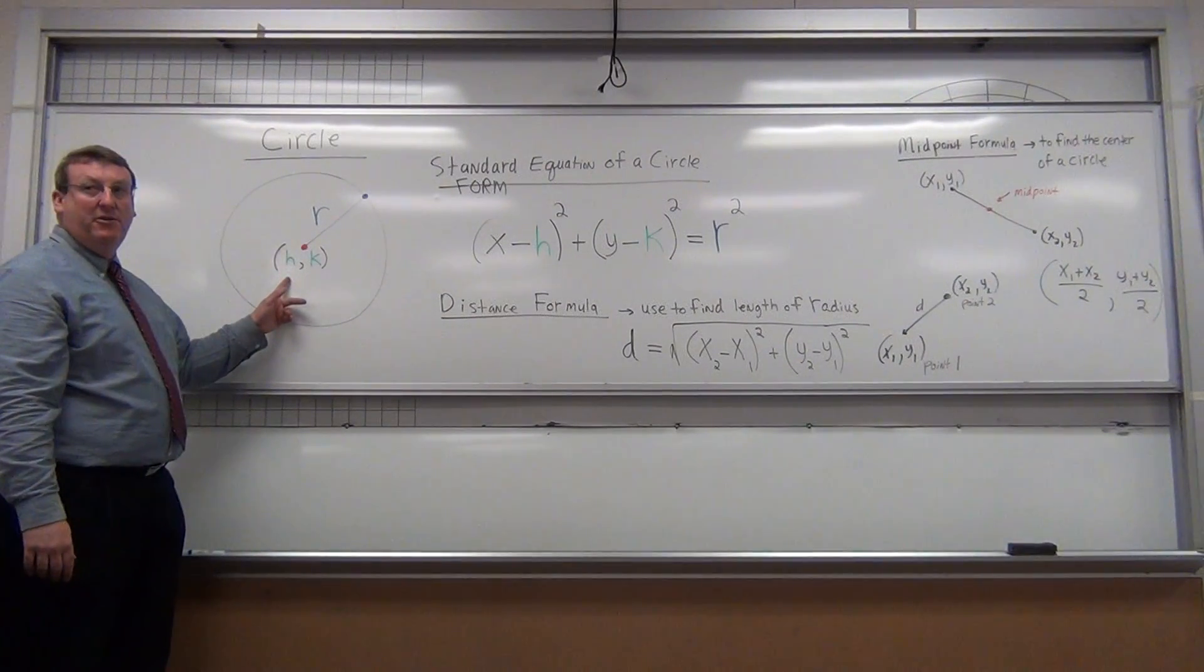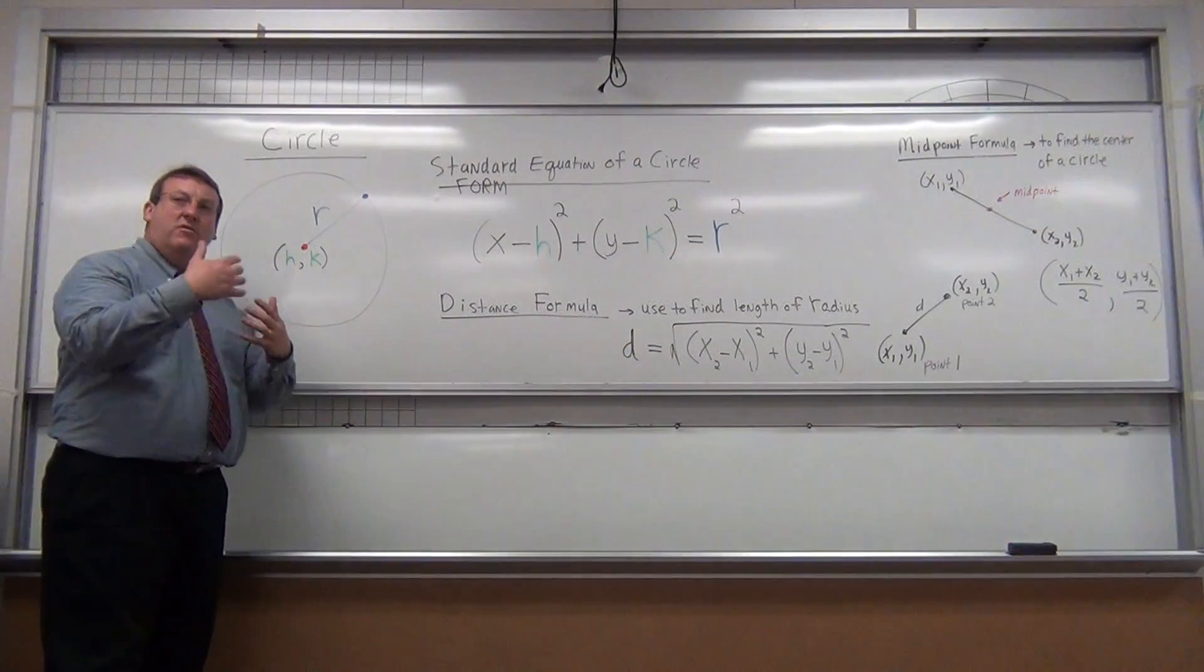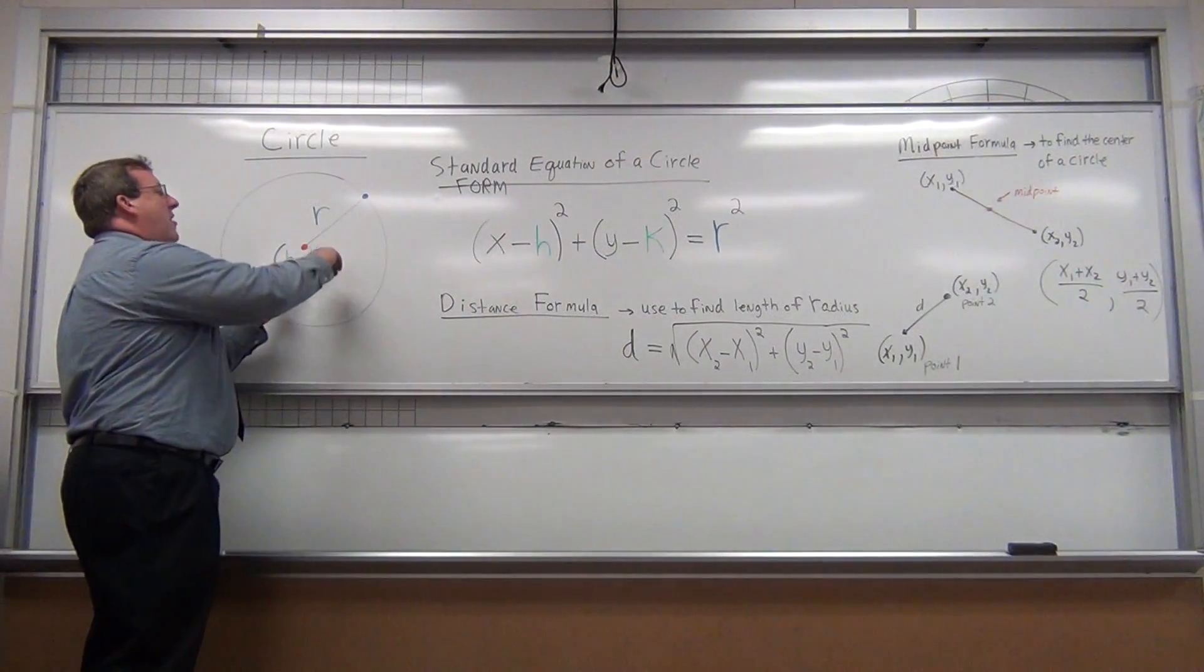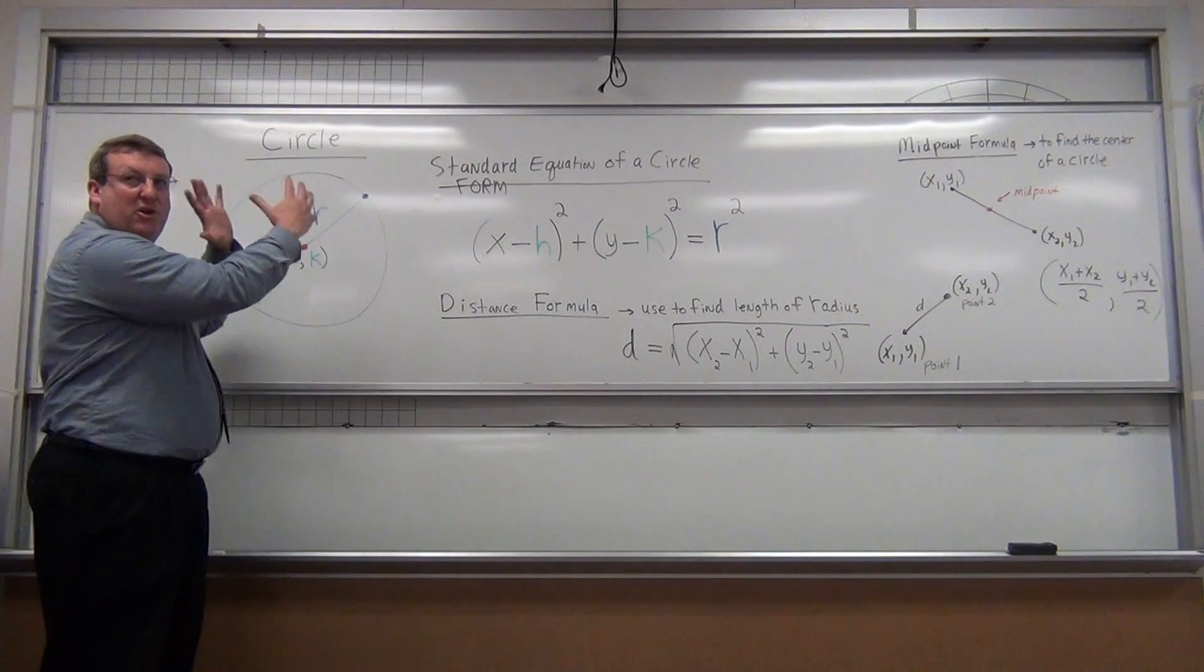H represents the X value of the circle. K represents the Y coordinate of the circle. So R is just the radius from the center to a point on the circle. So this kind of shows you the geometry.